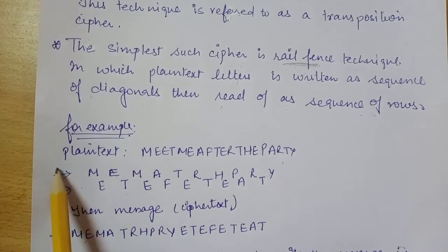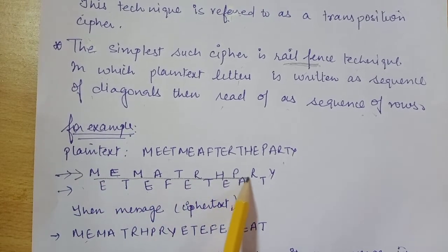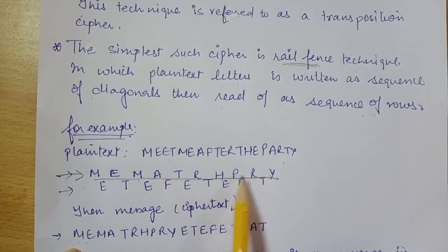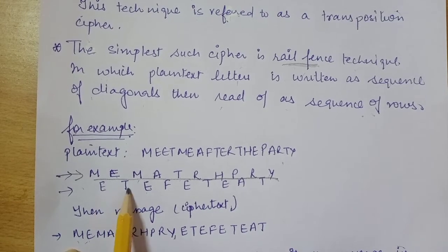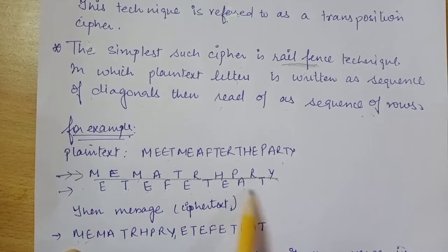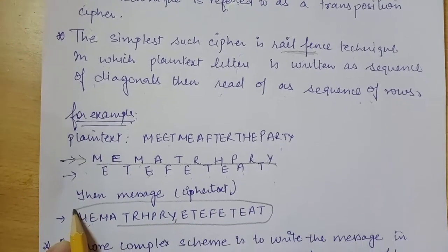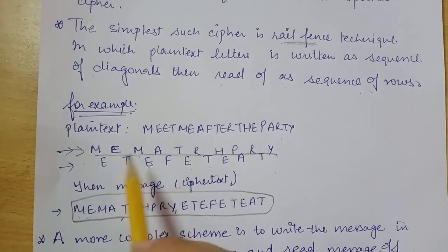And we will read that row-wise. Like first row, now we will write this particular row first, so it will become M E M A T R H P R Y, and then we write the second row that is E T E F E T E A T. So this will become our ciphertext.